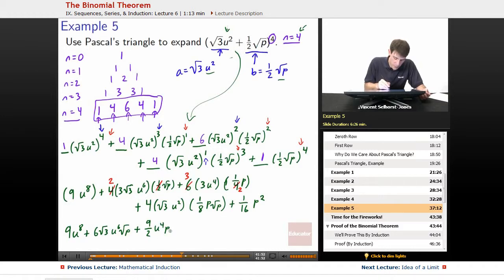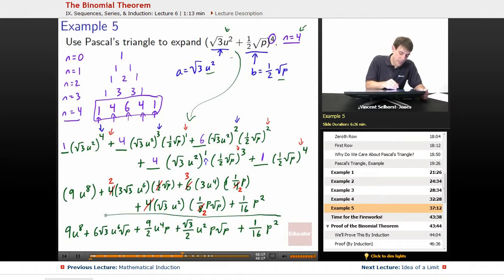Plus 4 root 3 times 4 root 3u squared, 1 eighth, p root p. Lots of things, so 1 eighth, that'll cancel the 2 when it knocks out this 4, and so we've got root 3 over 2u squared p root p, and finally, our last term, 1 sixteenth p squared, and there is the full expansion.